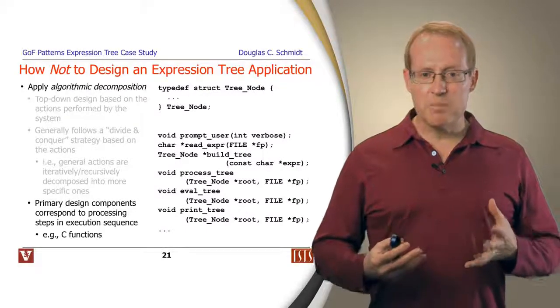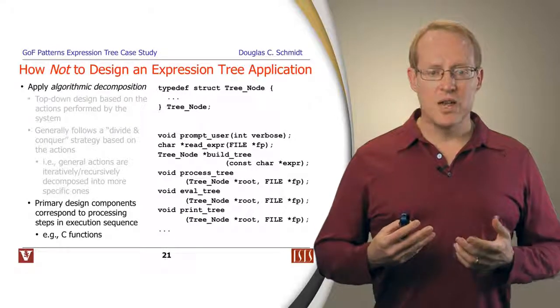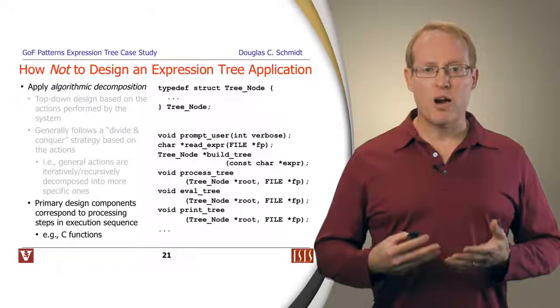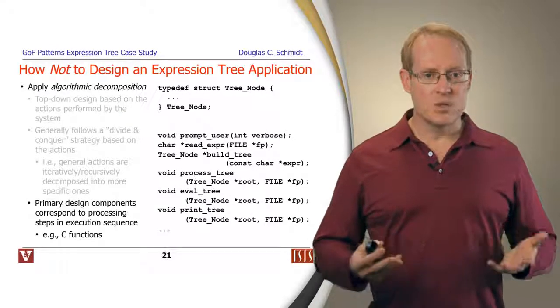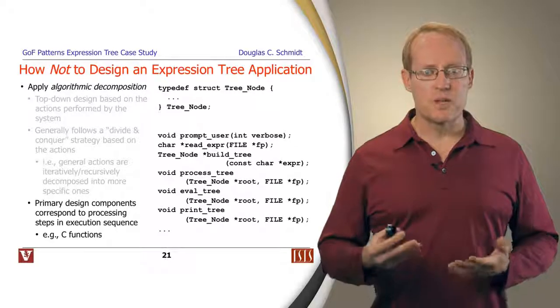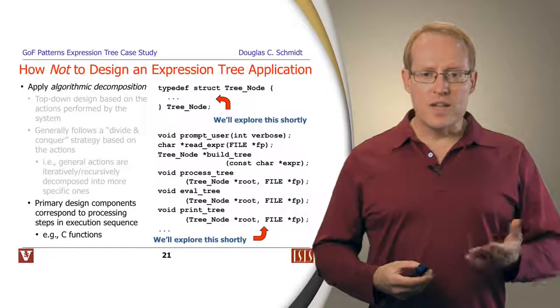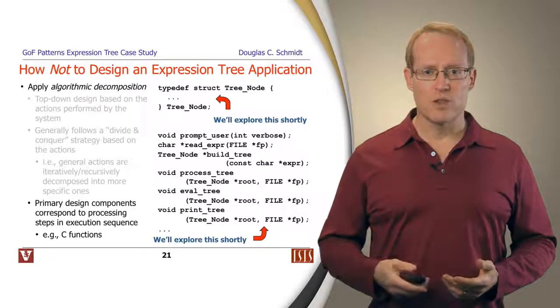The primary design components in an algorithmic decomposition correspond to execution steps or processing steps in the execution sequence. If you're implementing in a language like C, for example, this would typically end up involving functions. We're going to take a look at a couple of these functions as we go through this part.